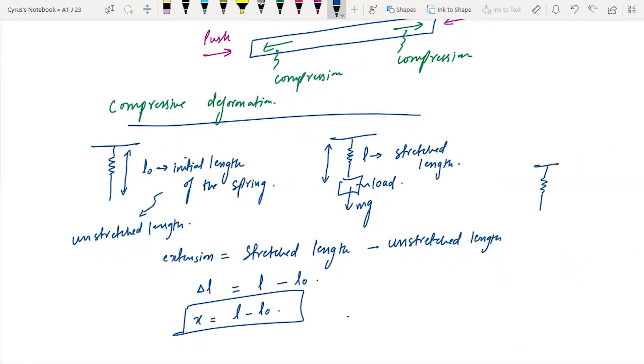For example, if you have a spring with initial length 5 cm and you attach a load and the length becomes 7 cm, so extension is 7 minus 5 which is 2 cm.